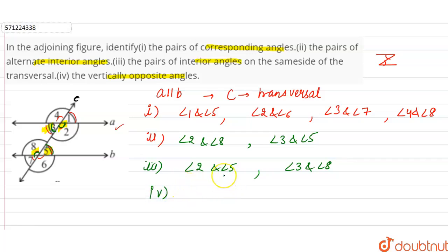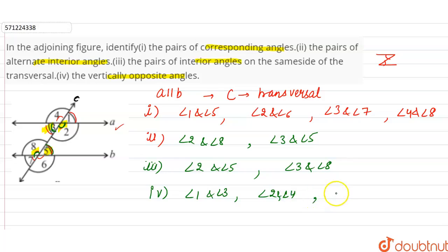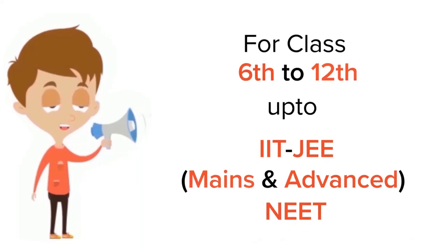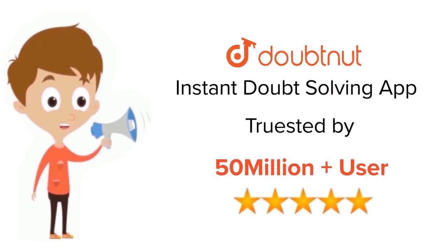The last part is vertically opposite angles. The pairs of vertically opposite angles are: angle 1 and angle 3, and angle 2 and angle 4. On line b, we have angle 5 and angle 7, and angle 6 and angle 8. These are all the vertically opposite angles.